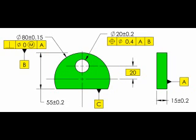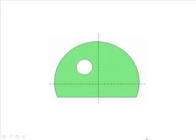But since datum feature C was not referenced in the position tolerance, there is no limit to how far the hole can be off the 90 degree angle.